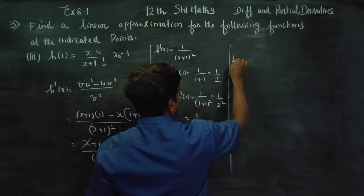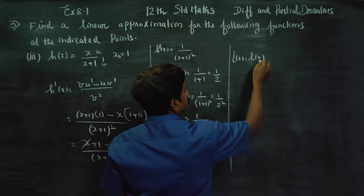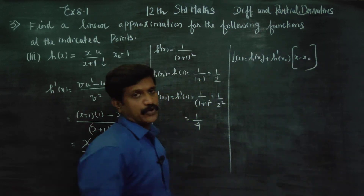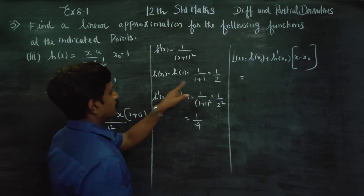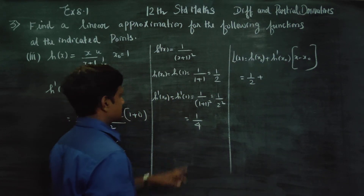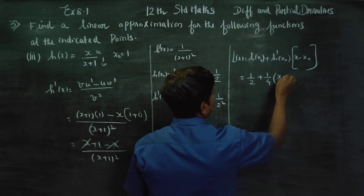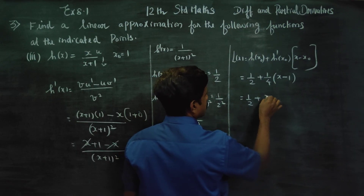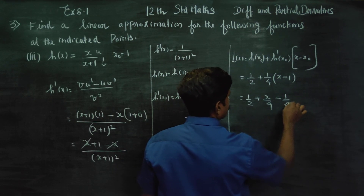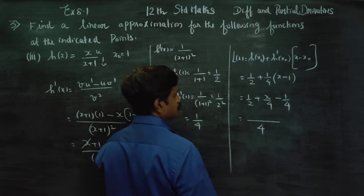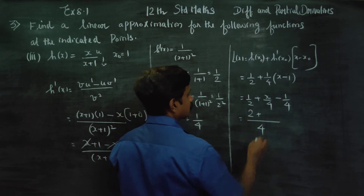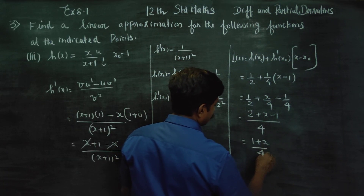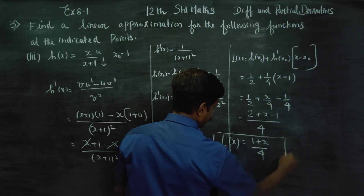The linear approximation formula gives L(x) = h(x₀) + h'(x₀)(x - x₀) = 1/2 + (1/4)(x - 1) = 1/2 + x/4 - 1/4. Taking LCM of 4: L(x) = (2 + x - 1)/4 = (1 + x)/4. This is the linear approximation.